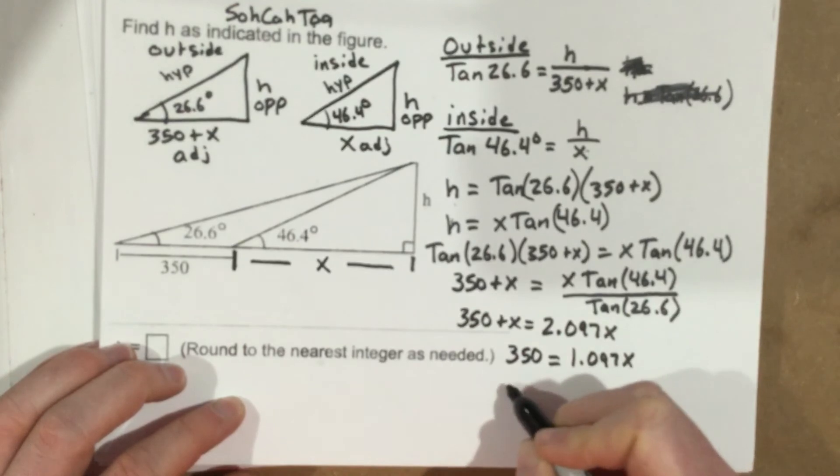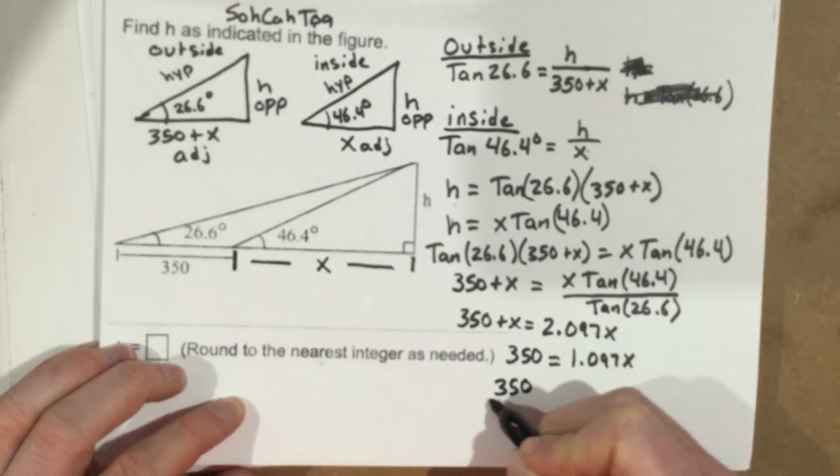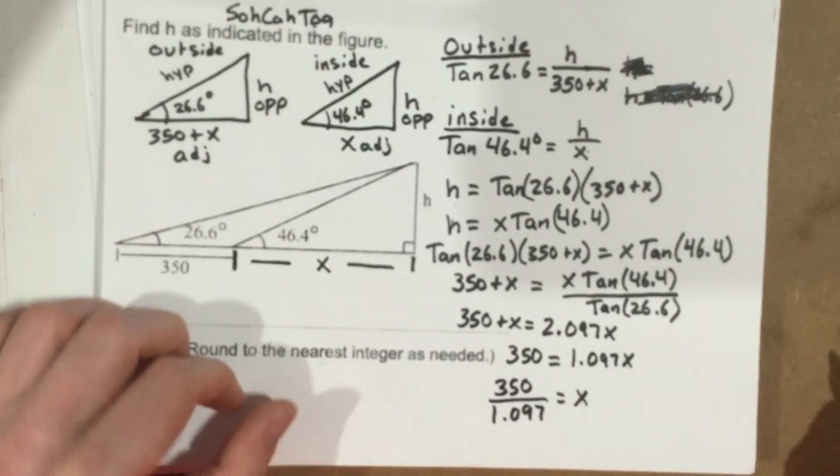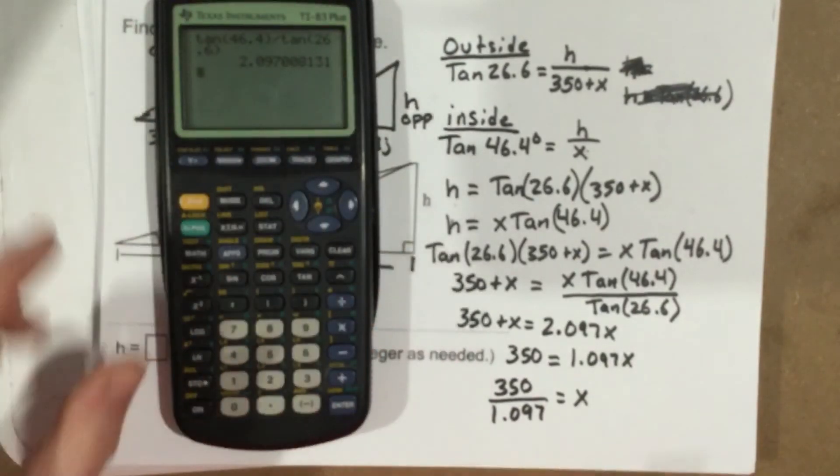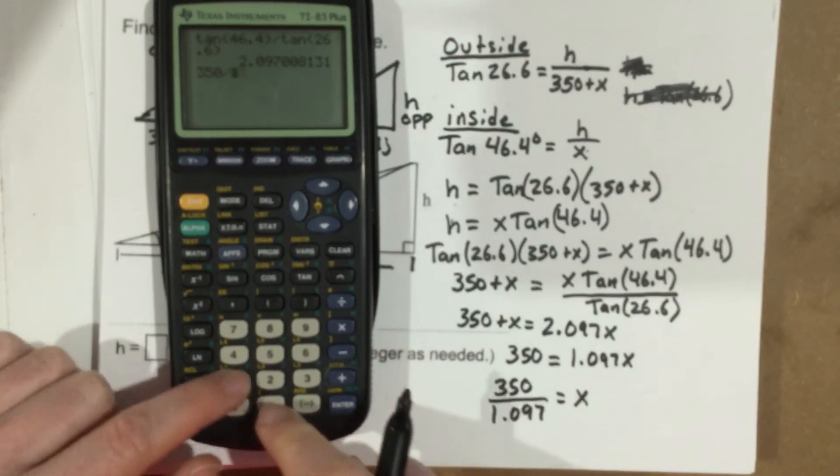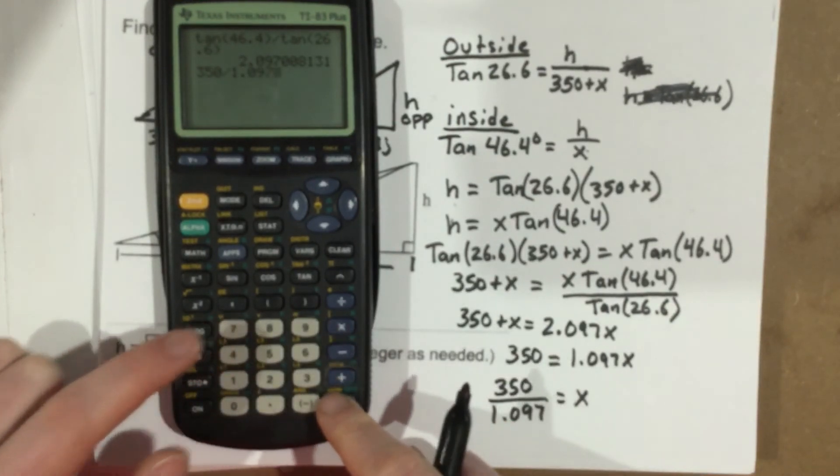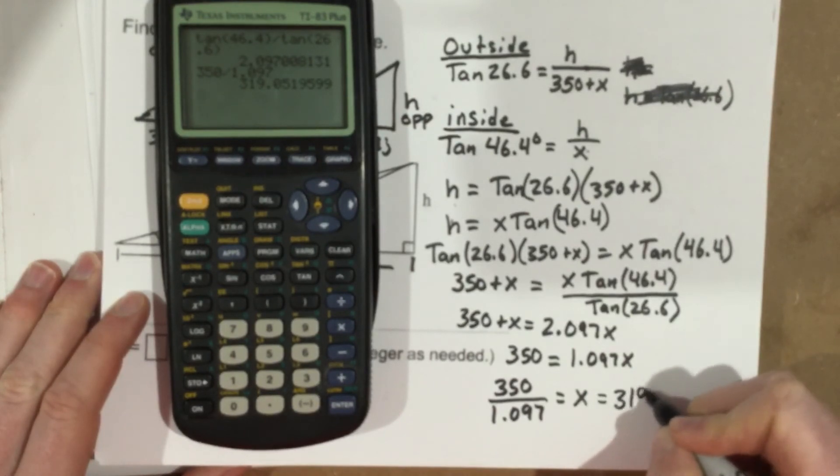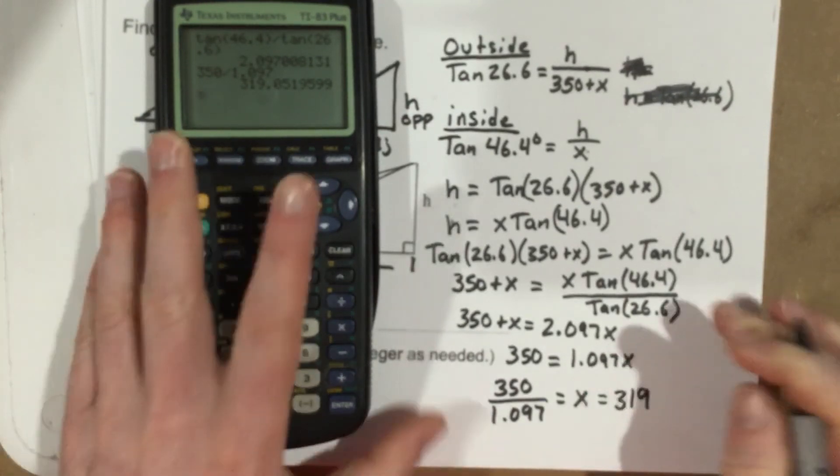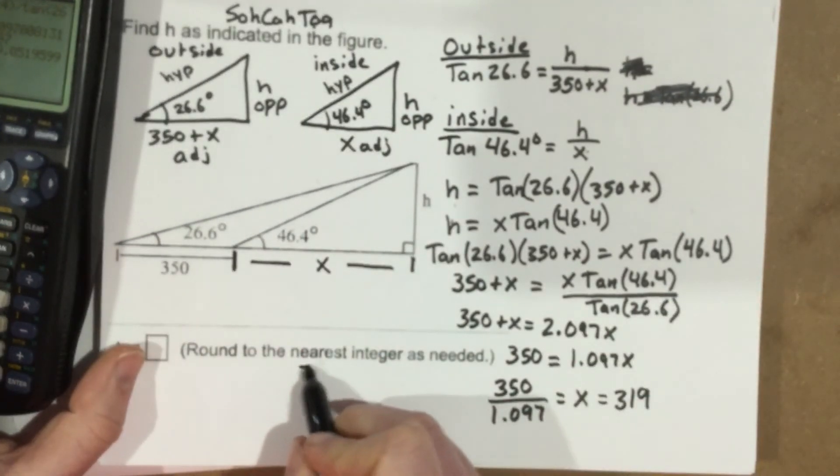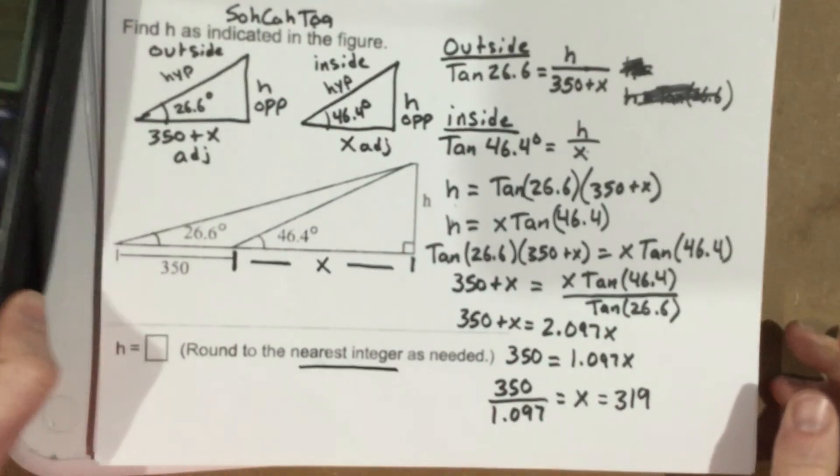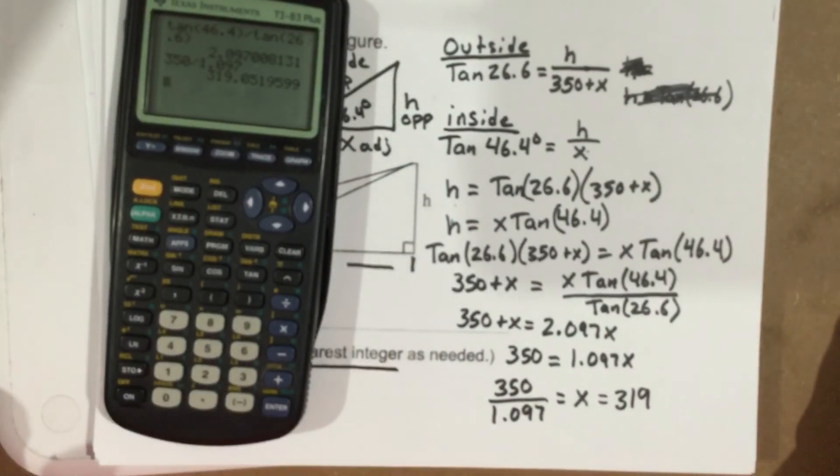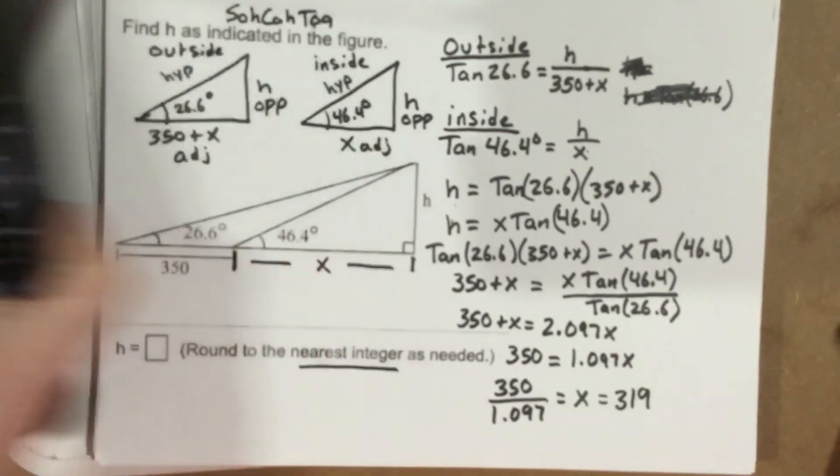Divide by 1.097, so 350 divided by 1.097 equals x. Plug that in the calculator. So 350 divided by 1.097 tells us that we have 319. Let's see what they want us to round to. Nearest integer. So 319 would be the nearest integer there. So our answer is 319.